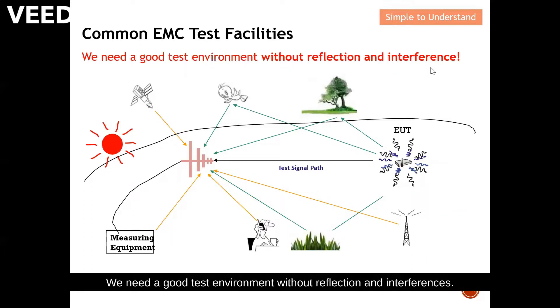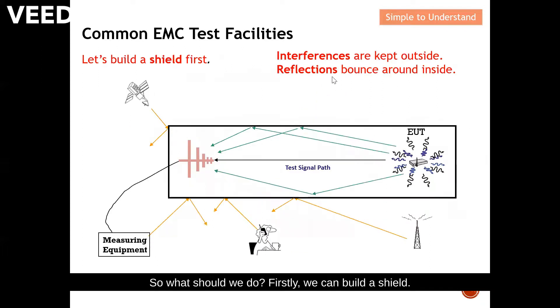Firstly, we can build a shield. So this is a shield. Once we build a shield, all the interference are kept outside. You can see from here the satellite communication is not able to reach the antenna anymore, same as the user on the mobile phone and also the base station.